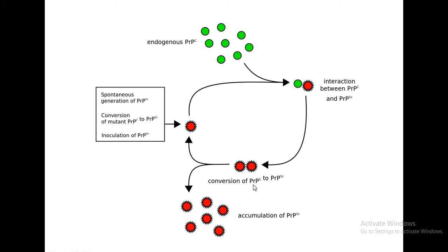Prions are also responsible for bovine spongiform encephalopathy, Kuru disease, fatal familial insomnia, Creutzfeldt-Jakob disease, and Gerstmann-Sträussler-Scheinker syndrome (GSS). All result in progressive degeneration of the brain.